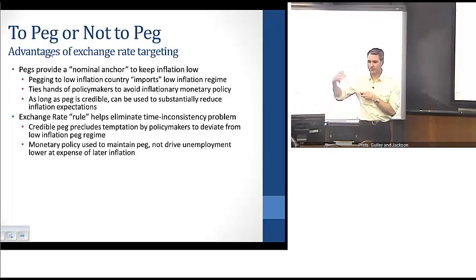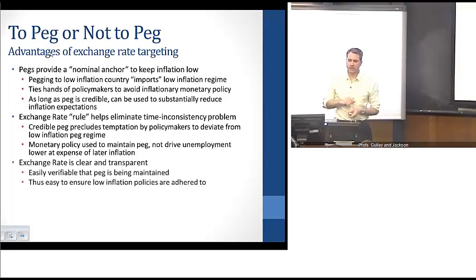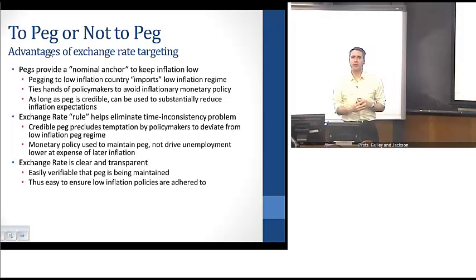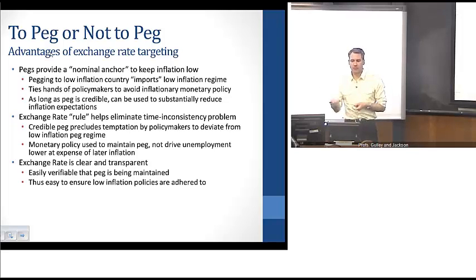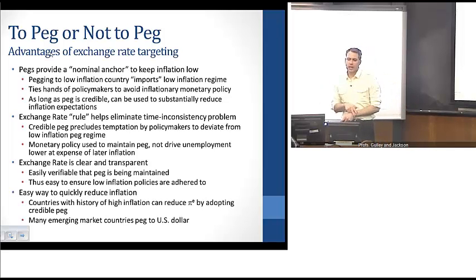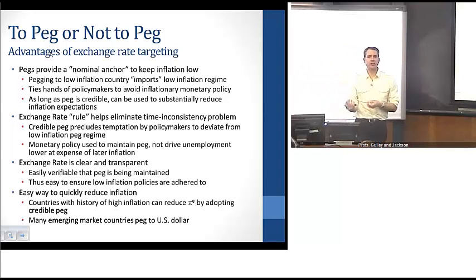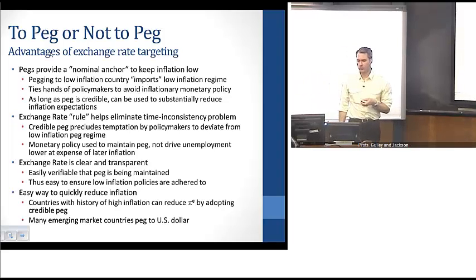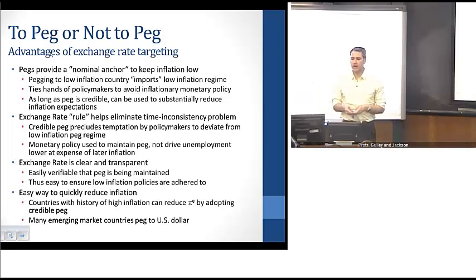The third advantage is that an exchange rate is really clear and transparent. You can see exactly how the exchange rate is behaving and verify pretty easily whether the central bank is maintaining the peg — and by proxy, whether low-inflation policies are being adhered to. It's also an easy way to quickly reduce inflation. If a country has a history of high inflation, it can reduce inflation expectations quickly by simply adopting a peg to an anchor country with a low-inflation monetary policy regime. For that reason, many emerging market countries peg their currency to the U.S. dollar or other large industrialized countries.